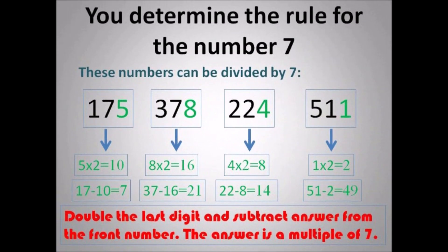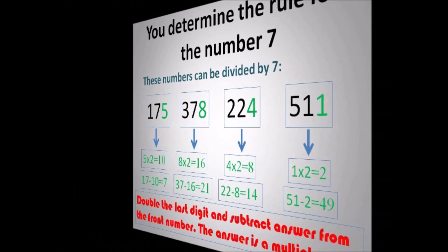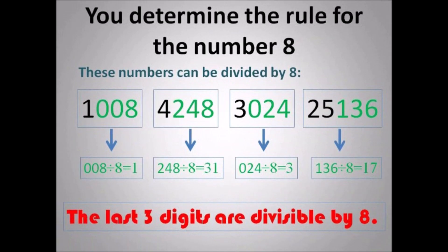For 7, you double the last digit and subtract the answer from the front number. And if the answer is a multiple of 7, then the number is divisible by 7. So that's why I said 5 times 2 is 10, and 17 take away 10 is 7. 8 times 2 is 16, and 37 take away 16 is 21 — so it's a multiple of 7. 4 times 2 is 8, and 14 is a multiple of 7 as well.